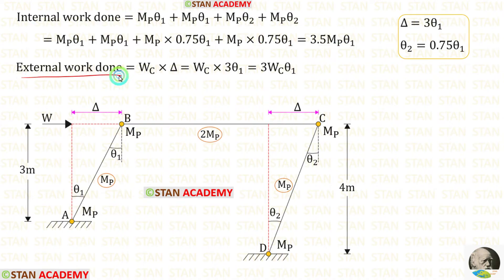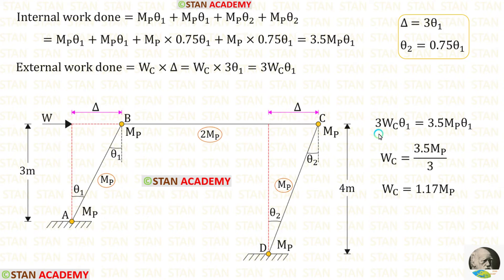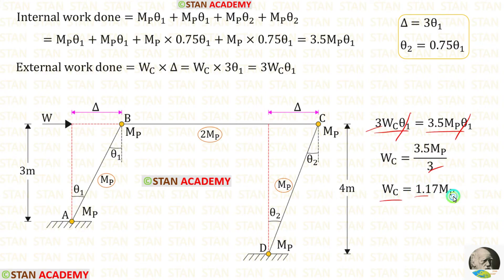Now let us find the external work done. We multiply the load W by the sway displacement delta. Substituting delta equals 3 theta 1, the external work done equals 3WC·theta 1. Equating external and internal work done and eliminating theta 1, we get WC equal to 1.17MB.